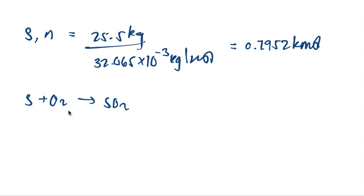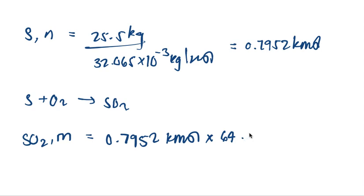We can calculate the mass of SO2 now because we know the moles and it's a one-to-one ratio. So what we do is take the moles and multiply it by the molecular weight. The SO2 mass is equal to 0.7952 kilomoles multiplied by 64.066 grams per mole. What we get is 50.949 kilograms.